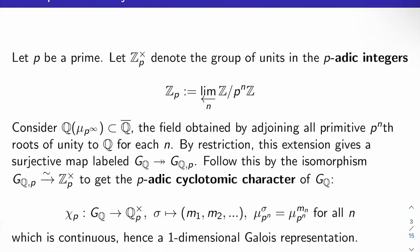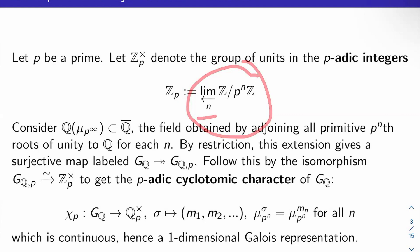Here's a key example of a one-dimensional Galois representation called the cyclotomic character. Let P be a prime. Let Z_P× denote the group of units in the P-adic integers Z_P. Z_P is the inverse limit over N of Z mod P^N Z. See last video for a quick explanation on inverse limits. The transition maps are the natural reduction maps from Z mod P^N Z to Z mod P^M Z when N is bigger than M.